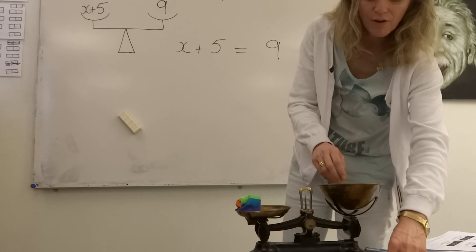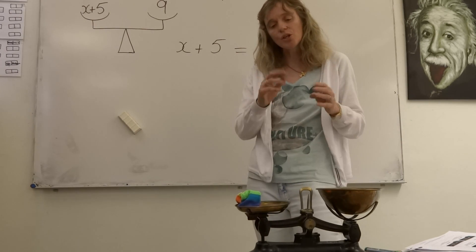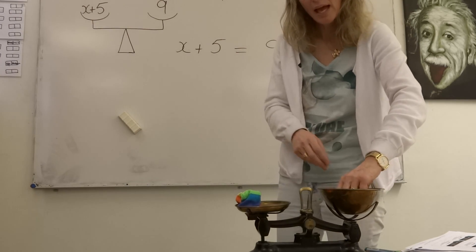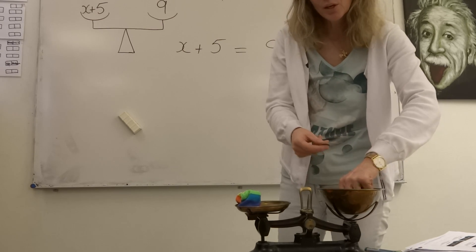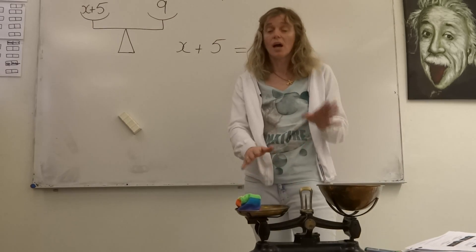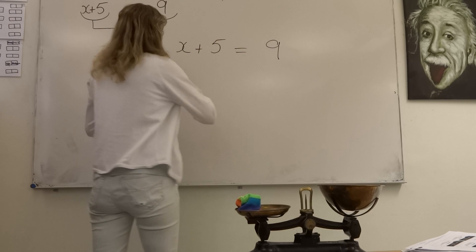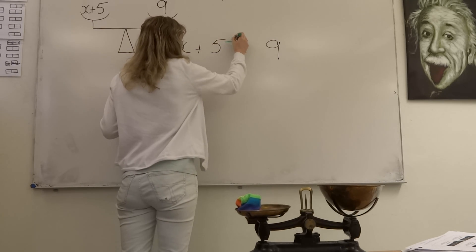So, I'm allowed to do whatever I like to my scale as long as I do the same thing to both sides. And now, I decided to take away 5 coins to both sides to make my scale balanced. So, this is what we're doing when we're actually doing that mathematically. I want you to practice with this skill.